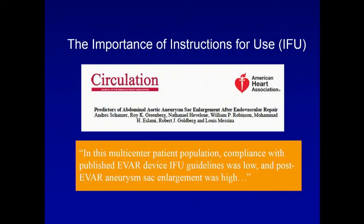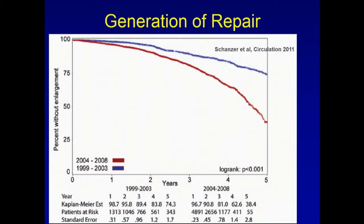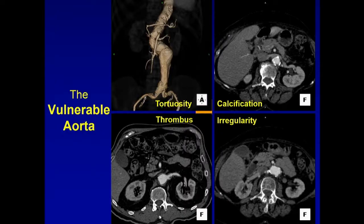This was examined in a 2011 Shanzer paper published in Circulation, looking at a multicenter patient population. Compliance with published EVAR device IFU guidelines was low, and therefore post-EVAR aneurysm sac enlargement was high. Looking at one graph from that paper, this actually appeared to worsen over time — as experience with EVAR grew in later years, the percent without enlargement continued to fall, probably due to straying from the IFU with familiarity with the procedure and device.